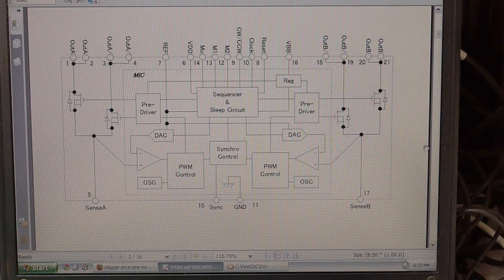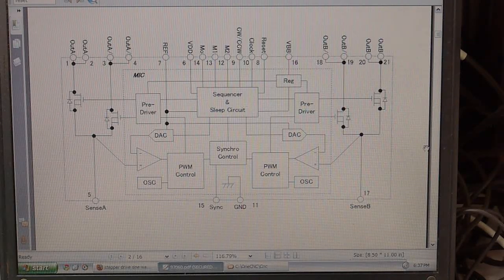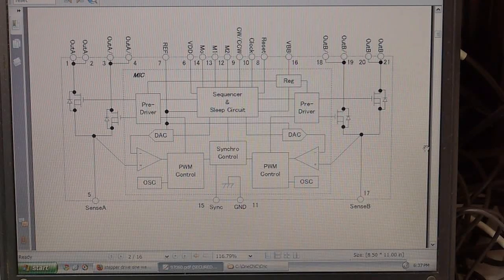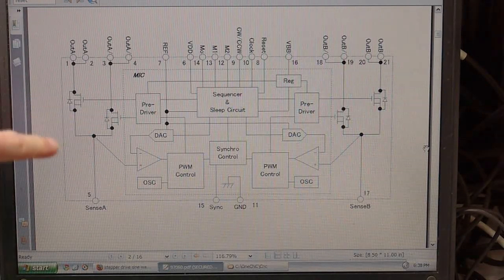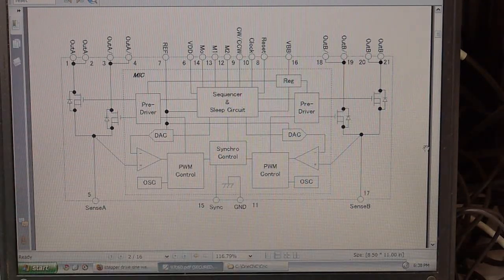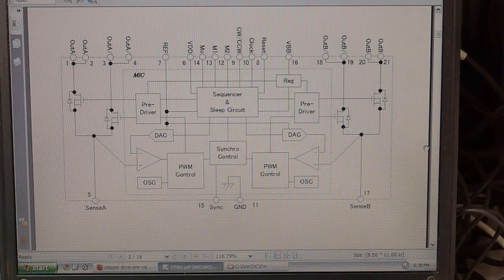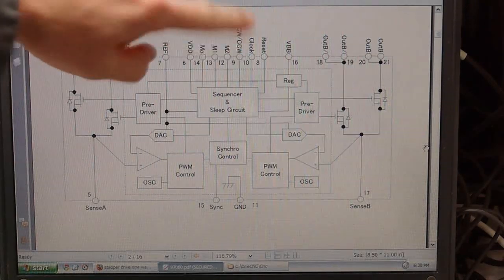So here's a block diagram of the chip. By the way I'll put a link in the description to where I bought this since they aren't particularly easy to find. The chip has H-bridge drivers for each of the phases of the stepper motor. This is meant to drive a unipolar stepper motor.